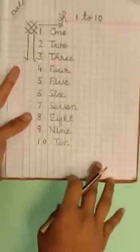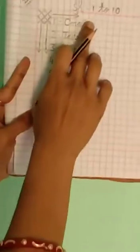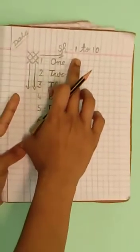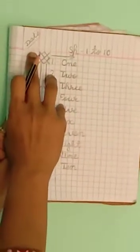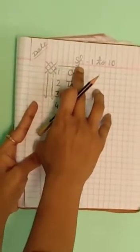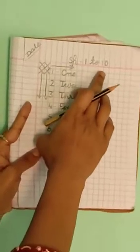See, this is small box maths copy. So today I am going to teach you spelling 1 to 10. First you give date, topic on the top spelling 1 to 10.